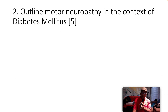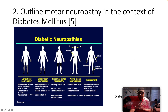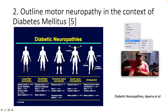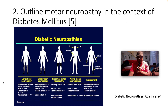Outline motor neuropathy in the context of diabetes mellitus for five marks. This answer is adapted from Diabetic Neuropathies by Aparna et al. We can categorize it five ways: there's large fiber neuropathy, small fiber neuropathy, proximal motor neuropathy, acute motor neuropathies, and entrapment syndromes.